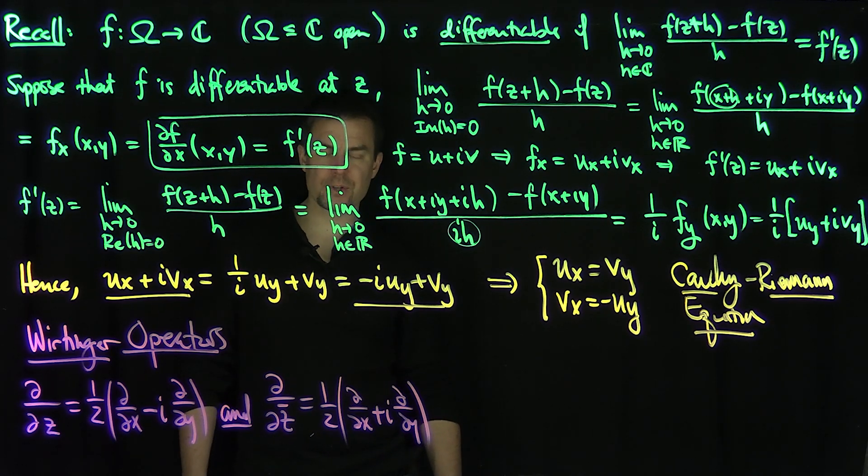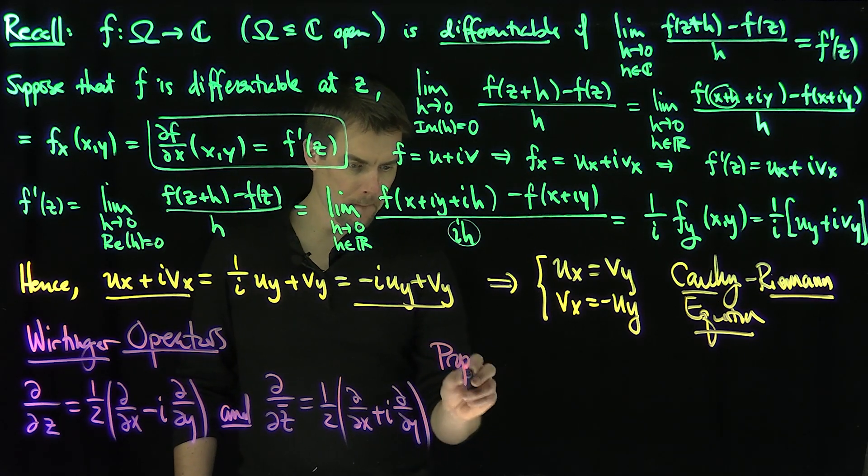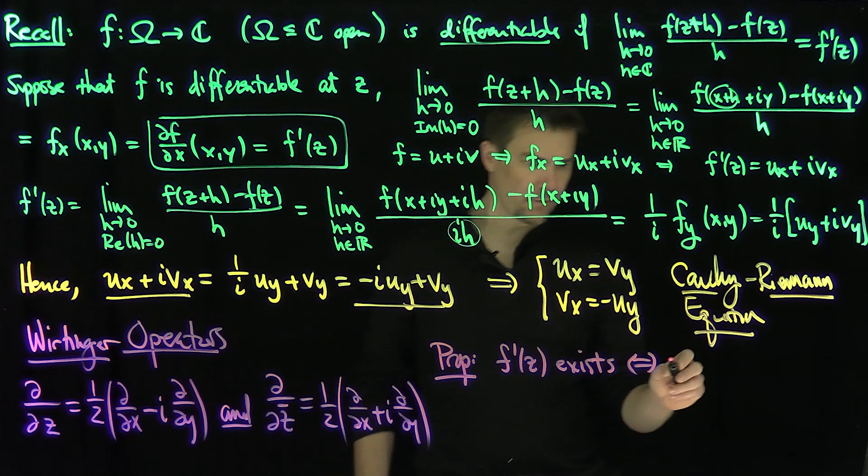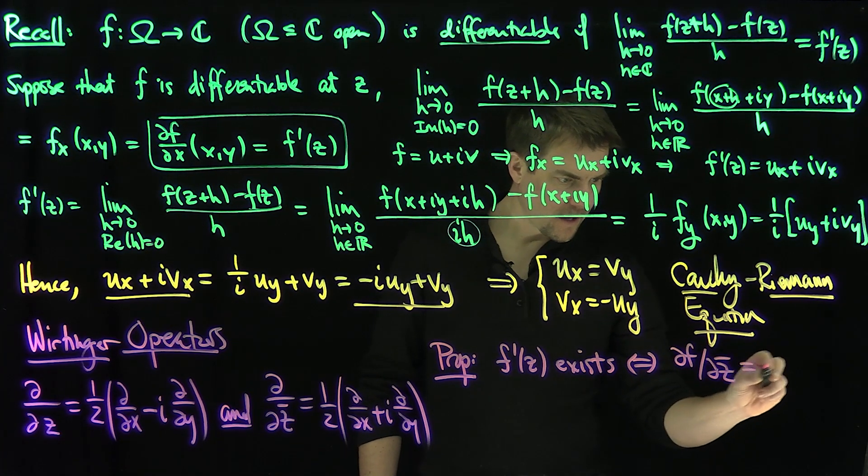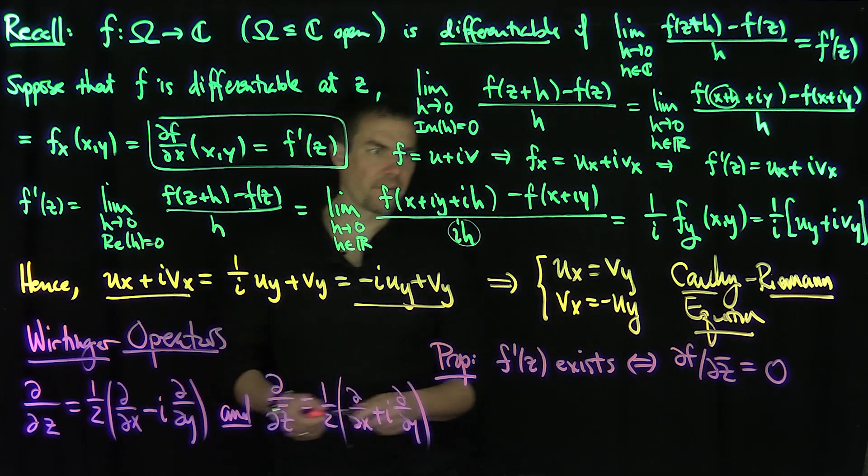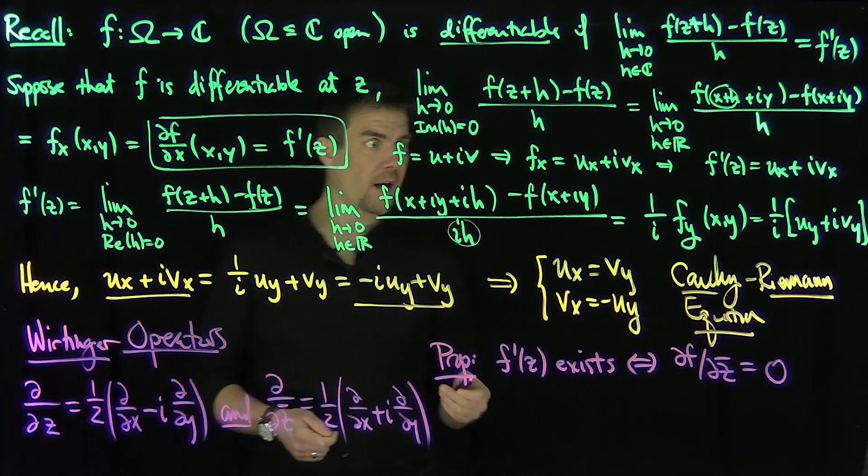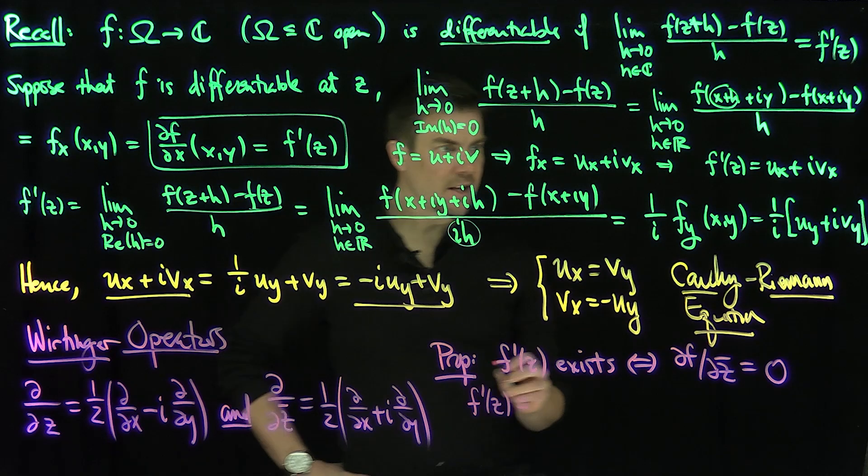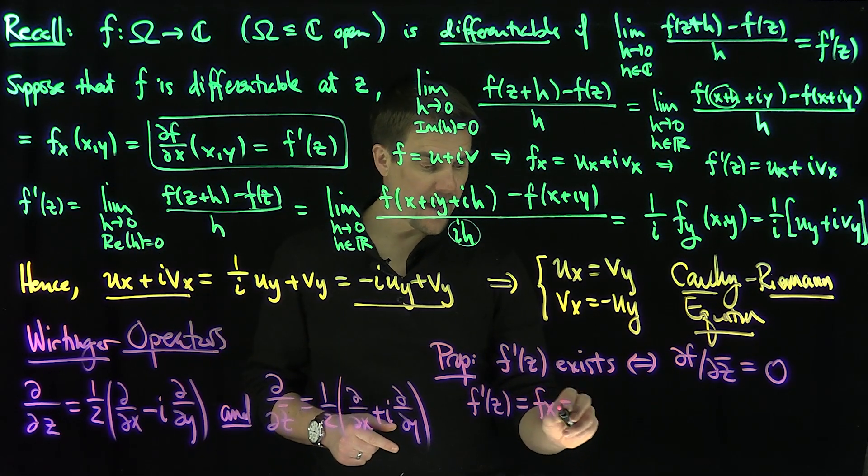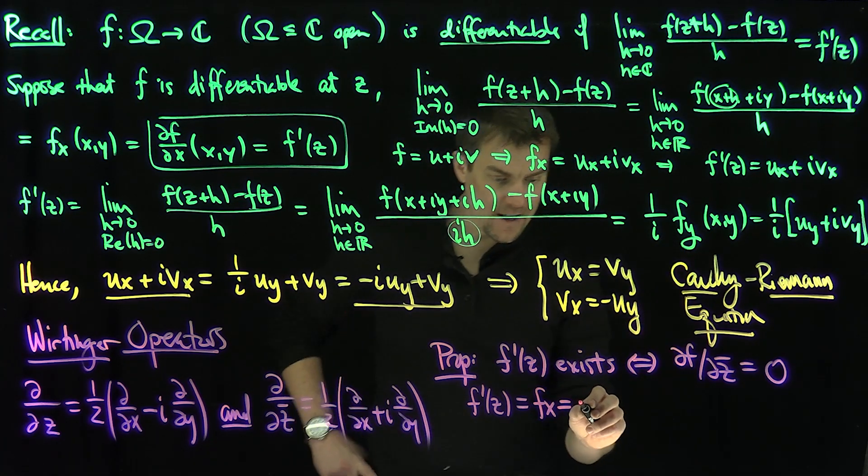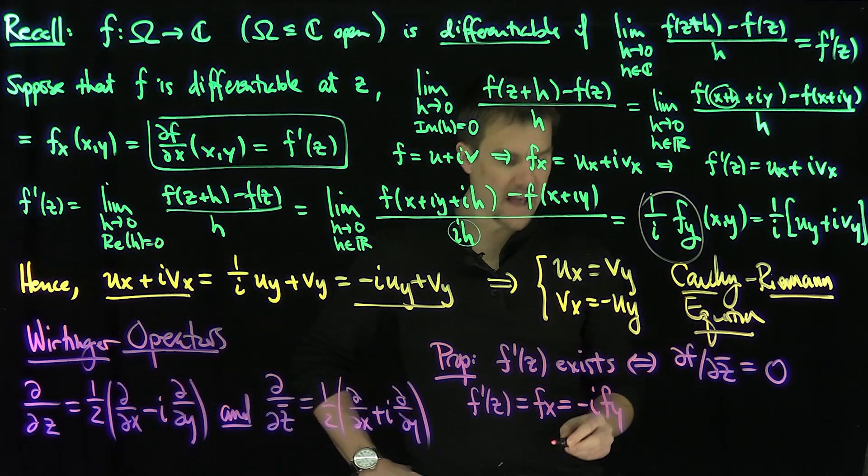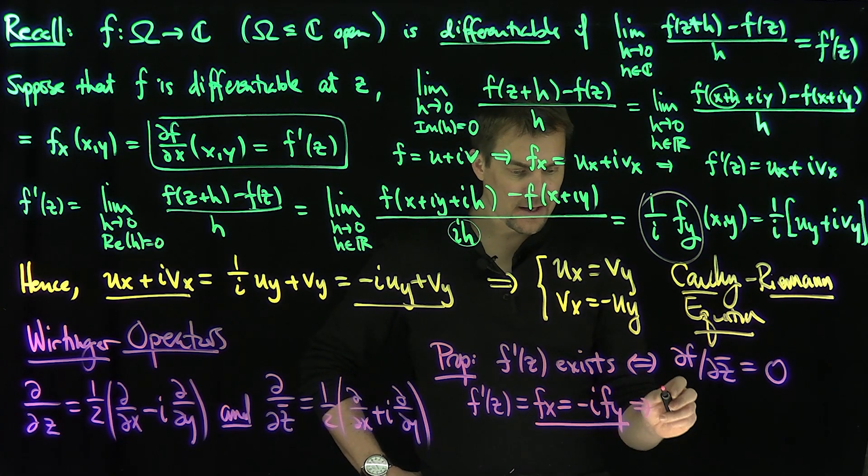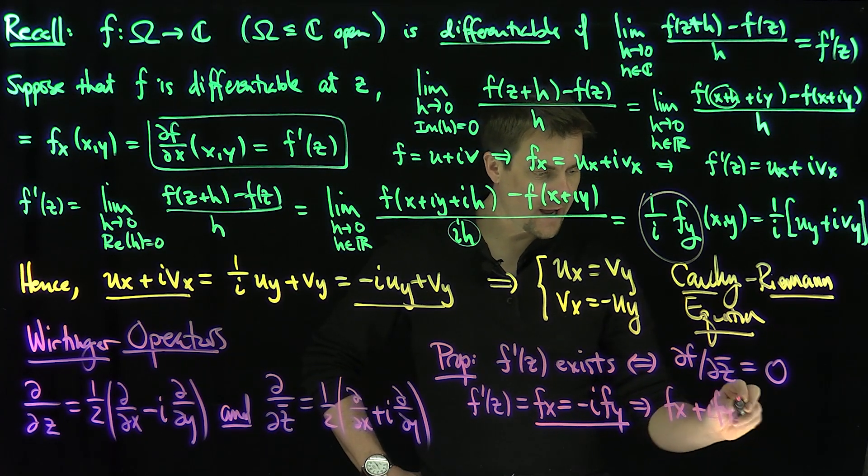I claim: f'(z) exists if and only if ∂f/∂z̄ = 0. If f' exists, then f'(z) = f_x = -if_y. These two are equal, which implies f_x + if_y = 0.